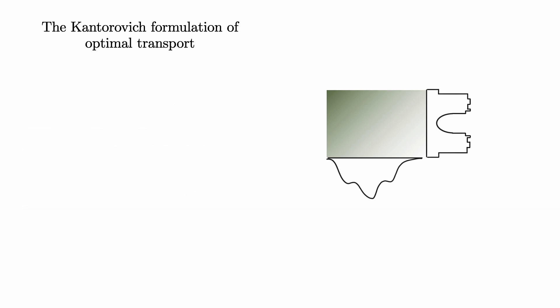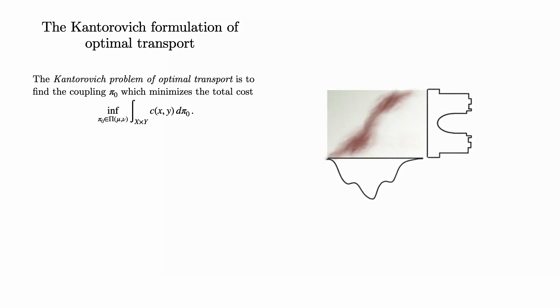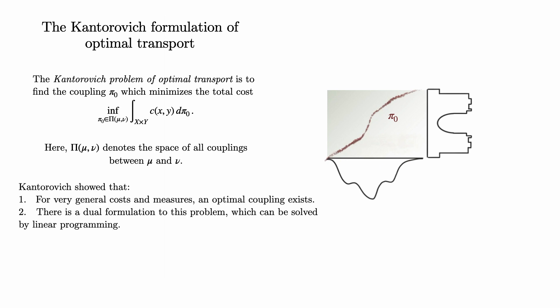With these preliminaries out of the way, we can now discuss the Kantorovich problem of optimal transport. This problem tries to find a coupling π₀, which minimizes the total cost of the transport. Here, Π(μ, ν) denotes the space of all couplings between μ and ν. The advantage of considering this framework is that for very general costs and measures, an optimal coupling exists. Furthermore, Kantorovich showed that there is a dual formulation to this problem, and it's possible to solve the dual problem using linear programming. For this work, Kantorovich was awarded with a Nobel Prize.